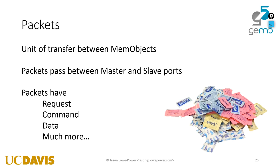A packet has a command, which is a specific thing to do - for instance, write or read. In the classic caches, it has all the coherence messages like upgrade requests, shared requests, flush requests. These are all different kinds of commands. It also has the actual data that you're going to write, or the data that comes back from memory when you read. Packets have lots and lots of other things as well.